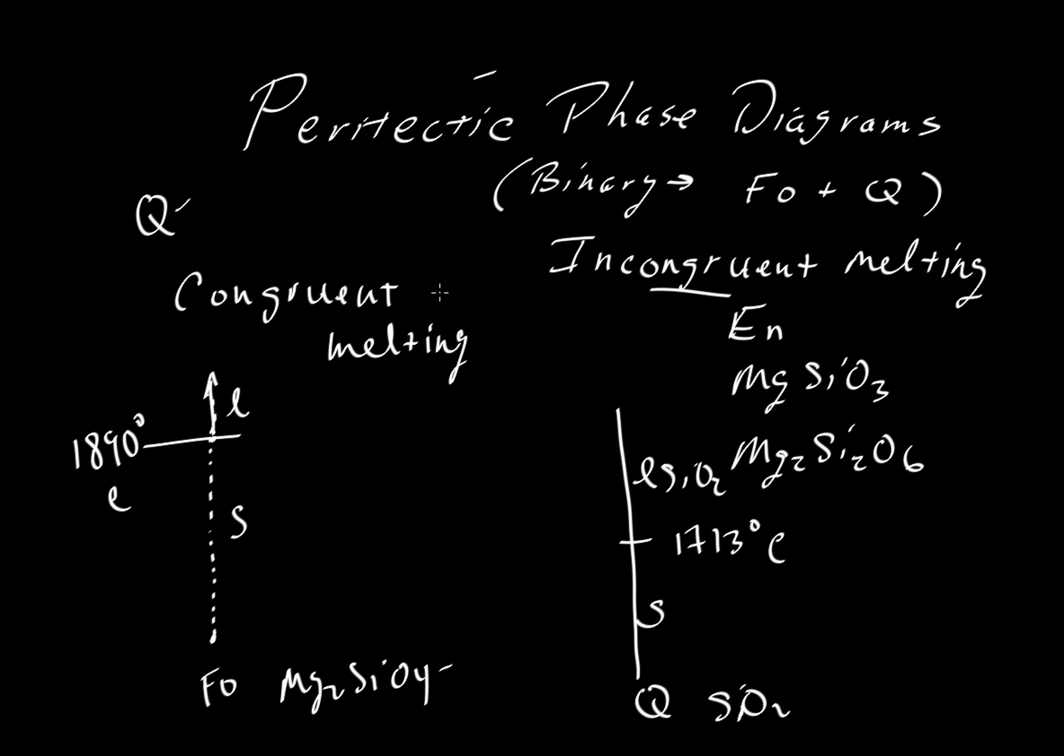And again, just to emphasize the point of congruent melting, the solid started as Mg2SiO4, and as we start creating liquid, we also get a liquid that is equal to Mg2SiO4.